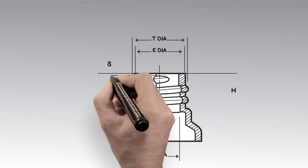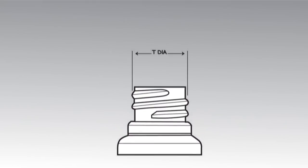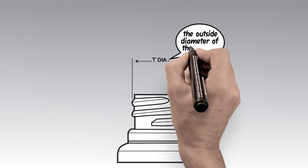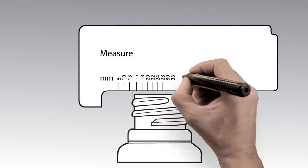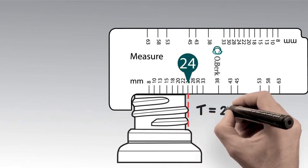You also have the S and H dimensions. Here we'll focus on the T dimension in the neck finish. The T dimension is the outside diameter of the thread. If you have a measuring gauge, you put the notch on the outside of the neck and measure all the way across to the other side.